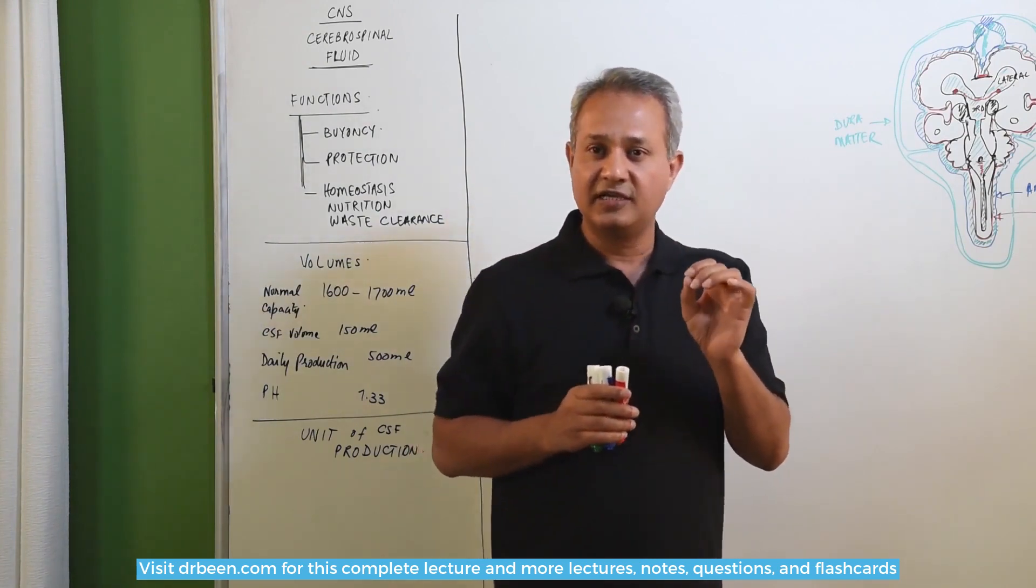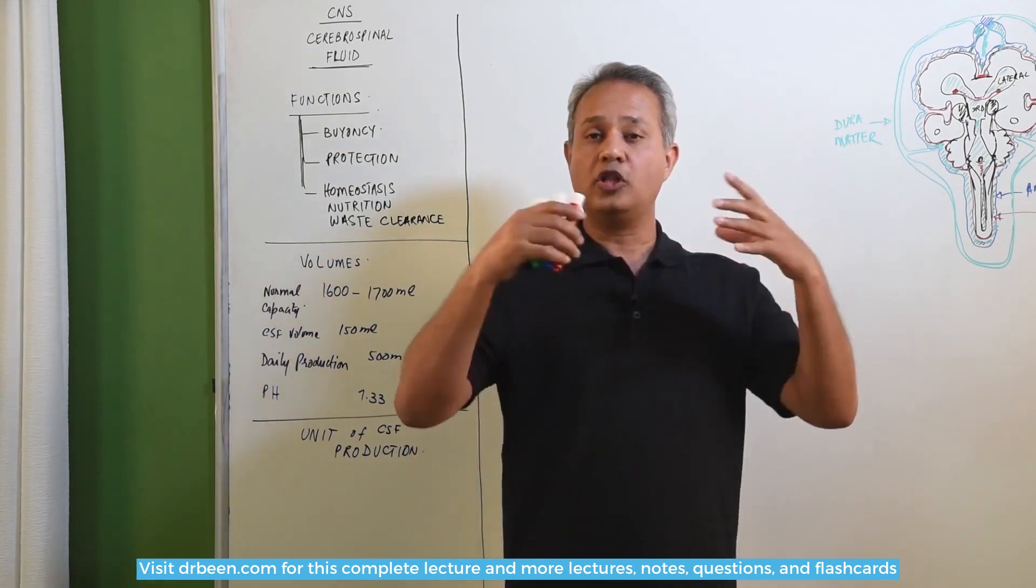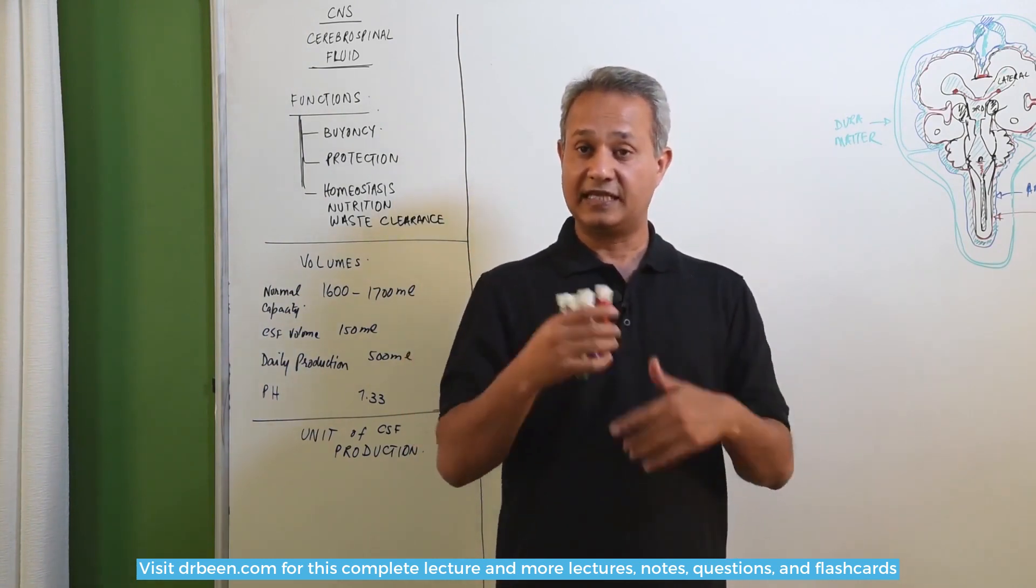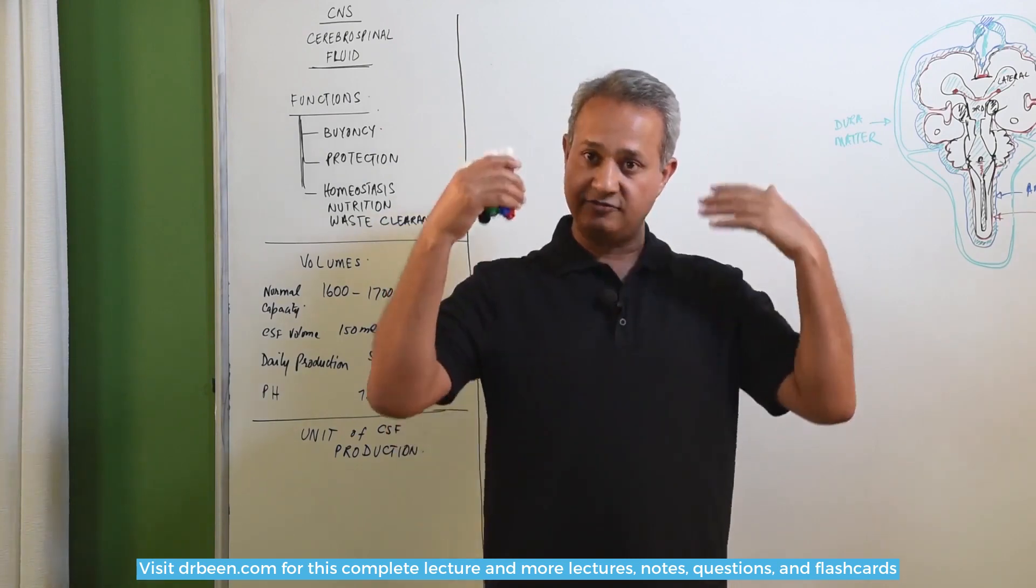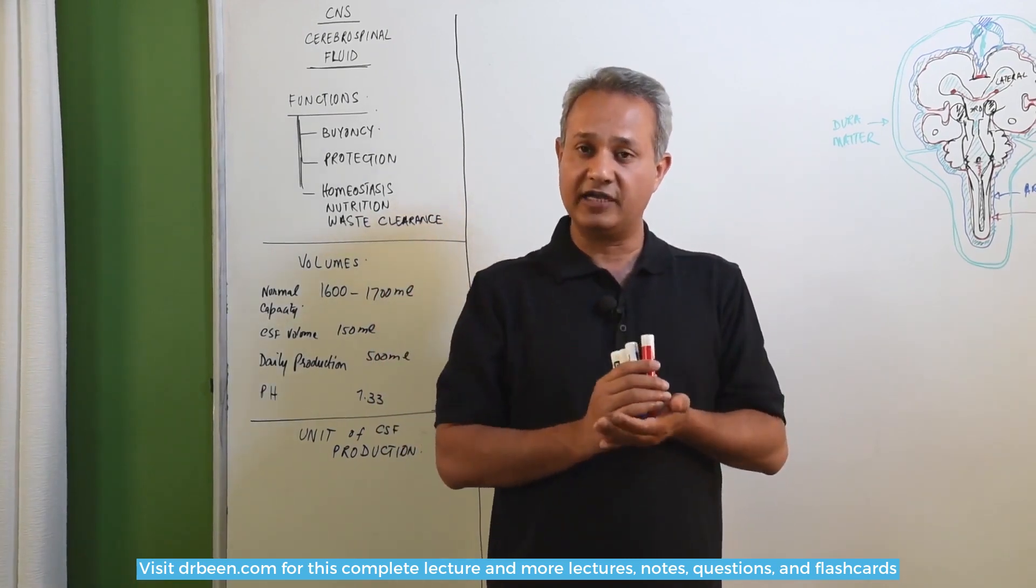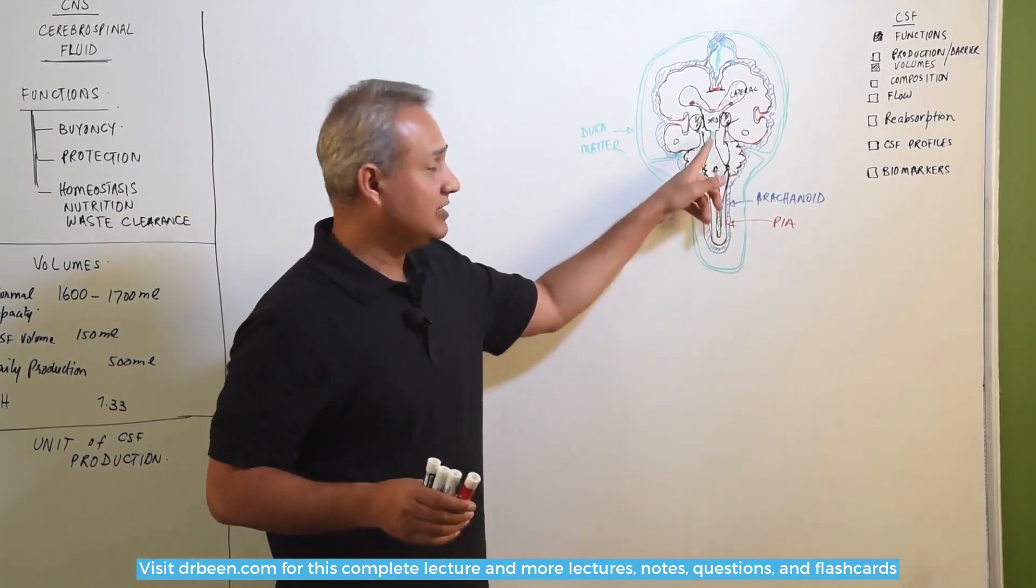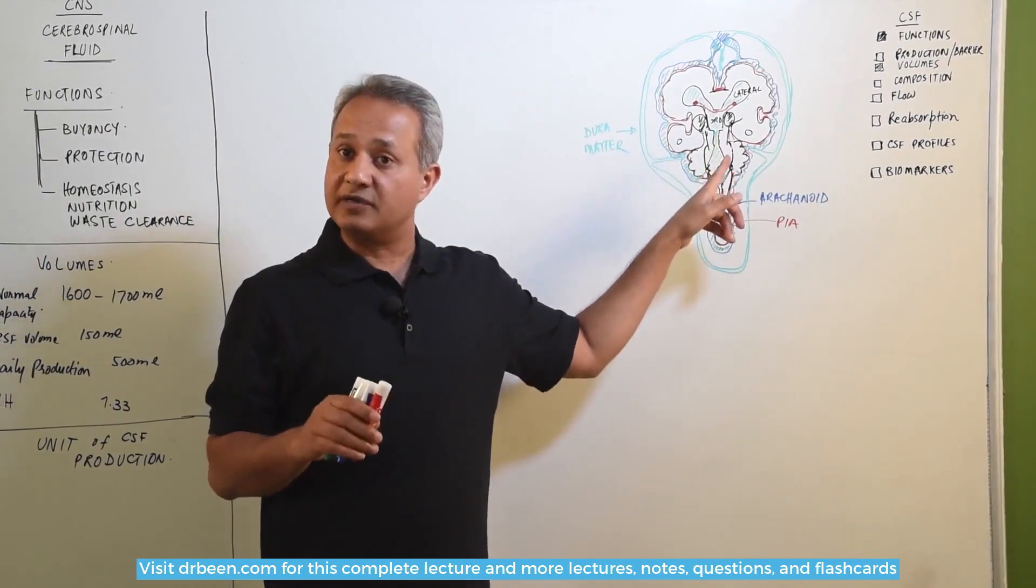These cells have an interesting behavior. They give rise to all the nervous system tissue. They keep dividing and differentiating into the nervous system tissues. Once they finish differentiating and dividing, they become stable cells and they become the epithelium of the cavities. There they are called ependymal cells.